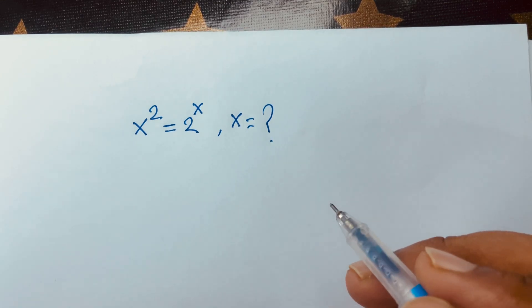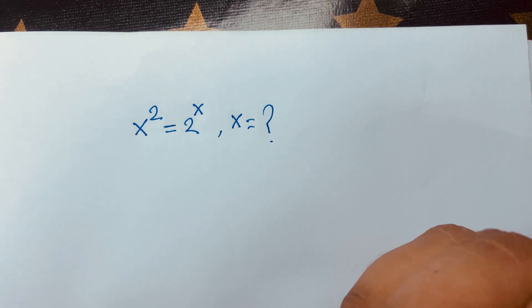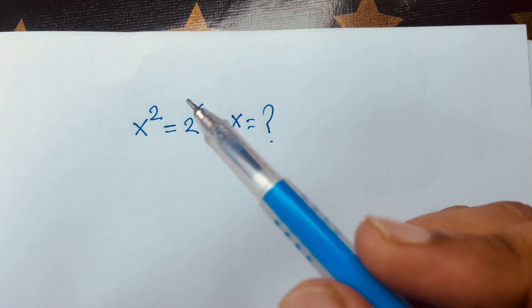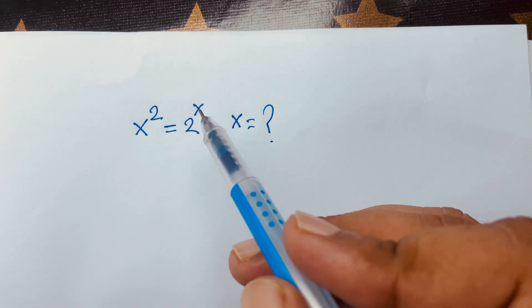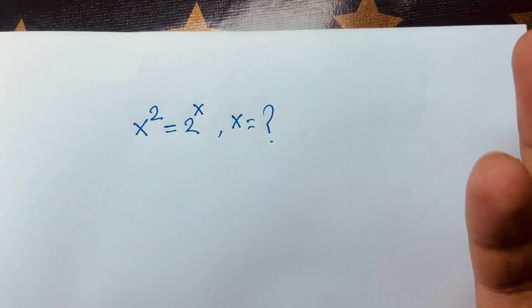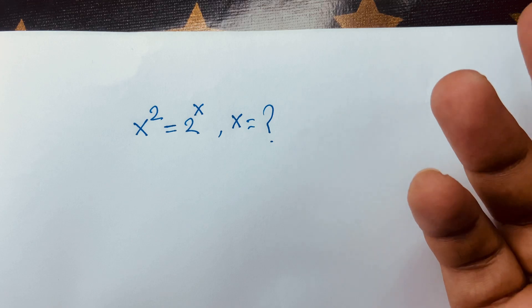First of all, if you think x is equal to 2, you can see easily 2 to the power 2 and 2 to the power 2 — both are the same. So I can say x equals 2 is our right answer.